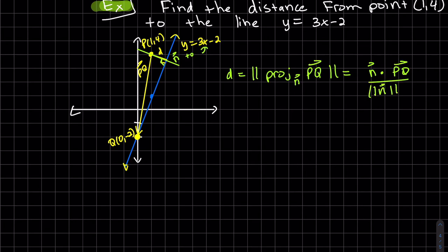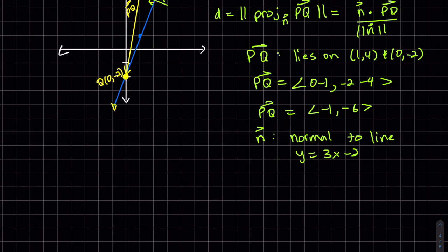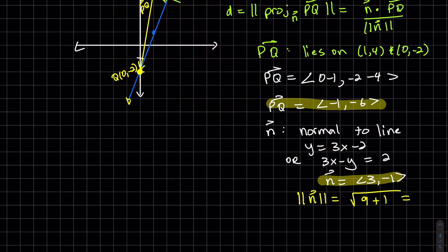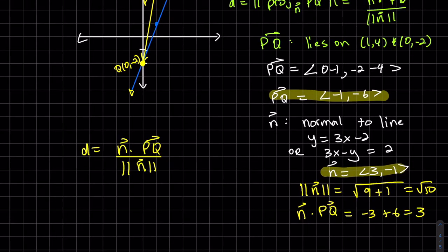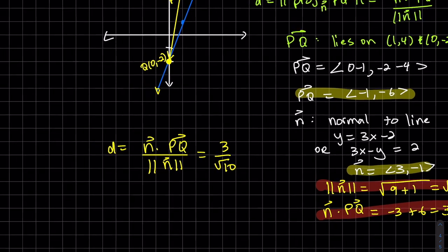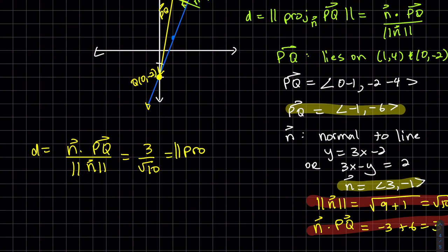So all we have to do is find these vectors. So the line PQ, we need two points on it. And there's our answer. Okay, one more example.